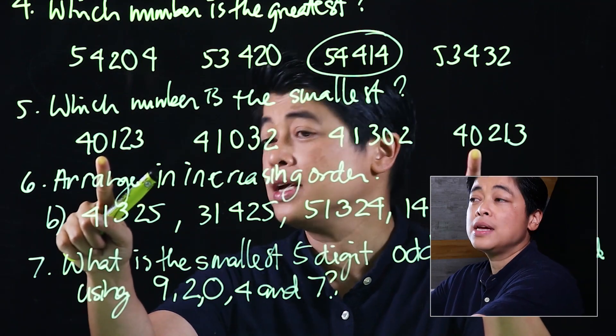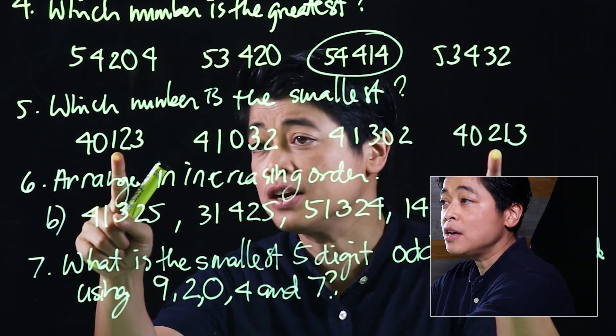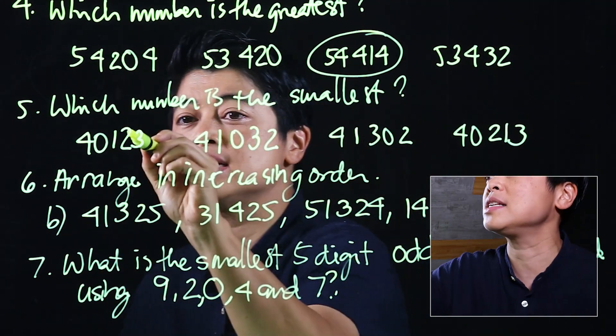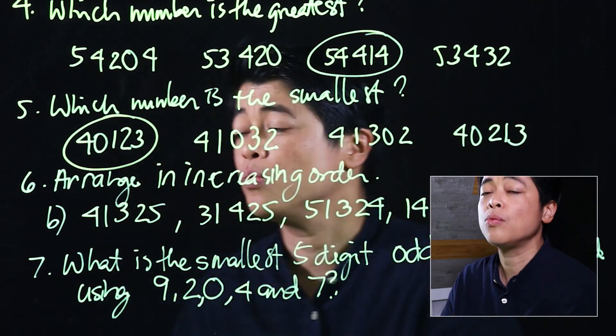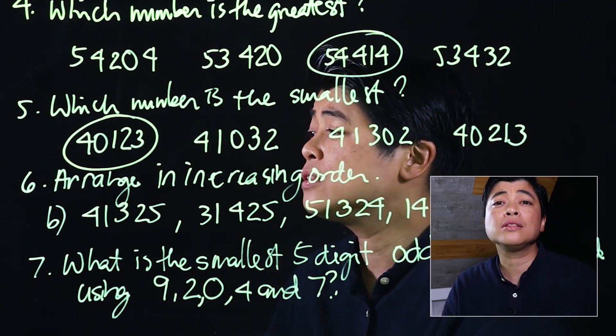If we go to the next place value, there's a 100 and there's a 200. Therefore, the smallest is 40,123. Again, we don't want to stress the kids by looking at the whole series of numbers.